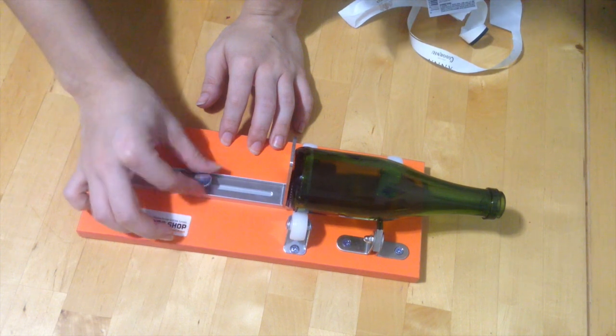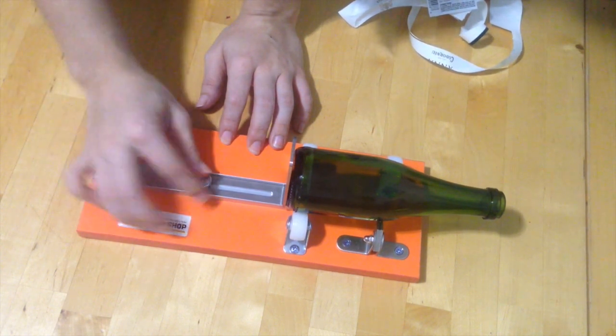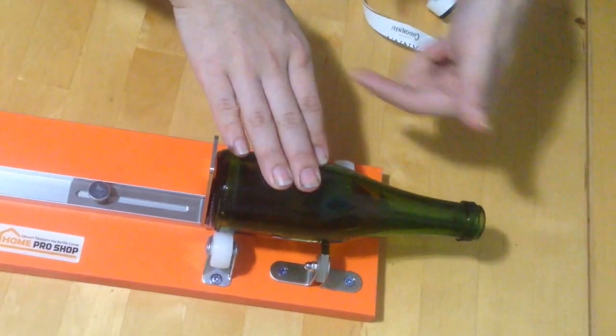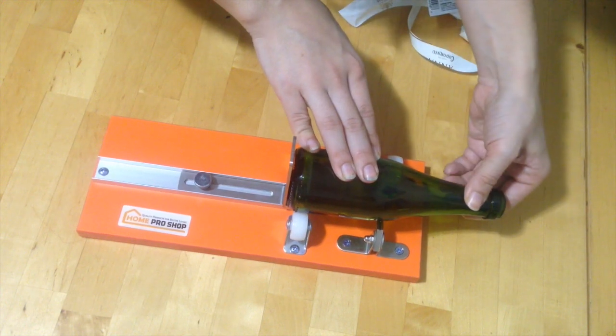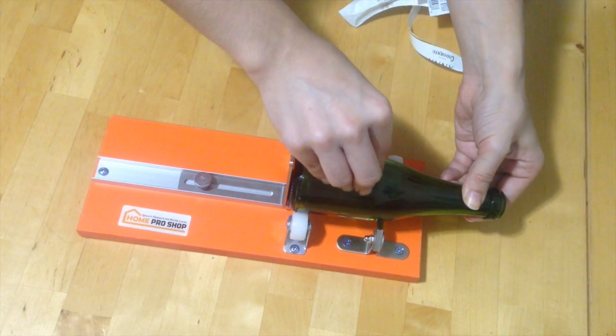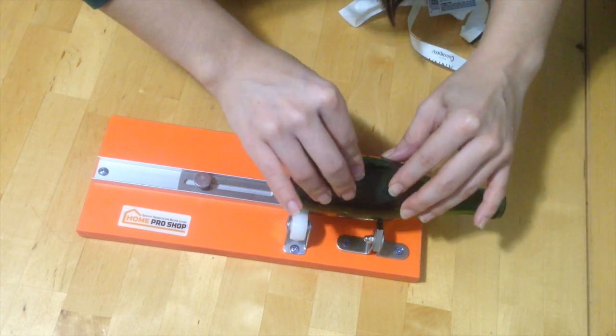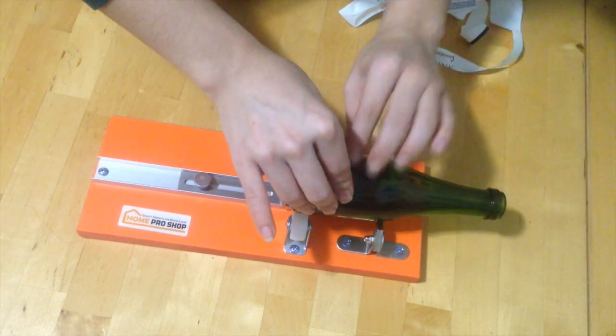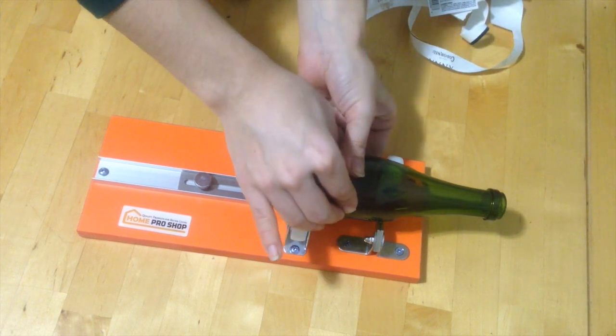So we're going to secure this holder in place. And then we're going to just roll the bottle around one time, pressing pretty hard, not too hard though. And we're going to stop where we started. We're not going to go past the line.